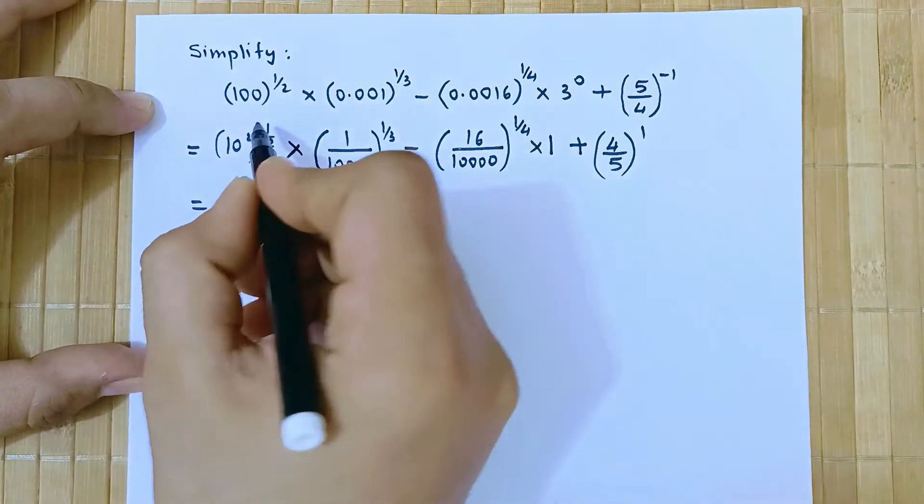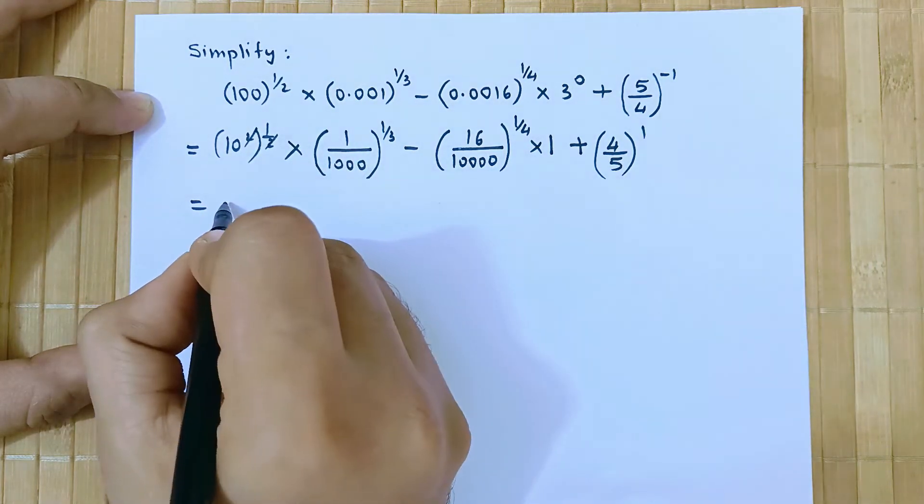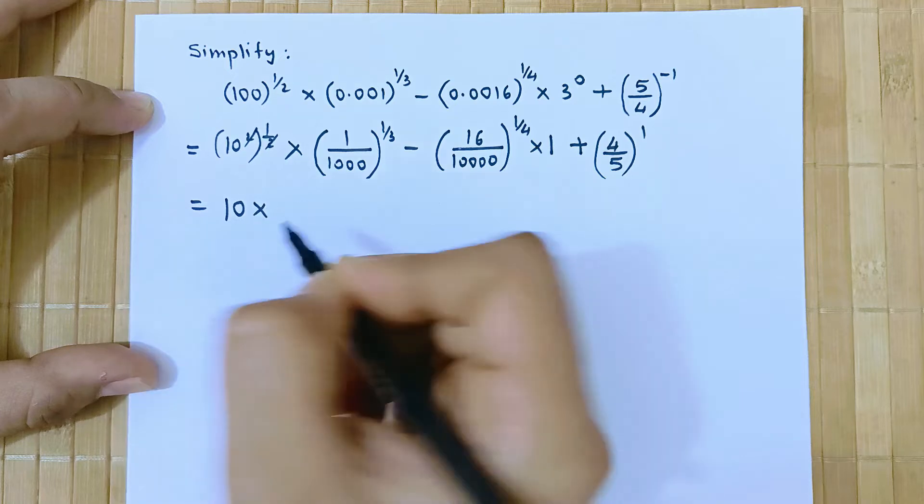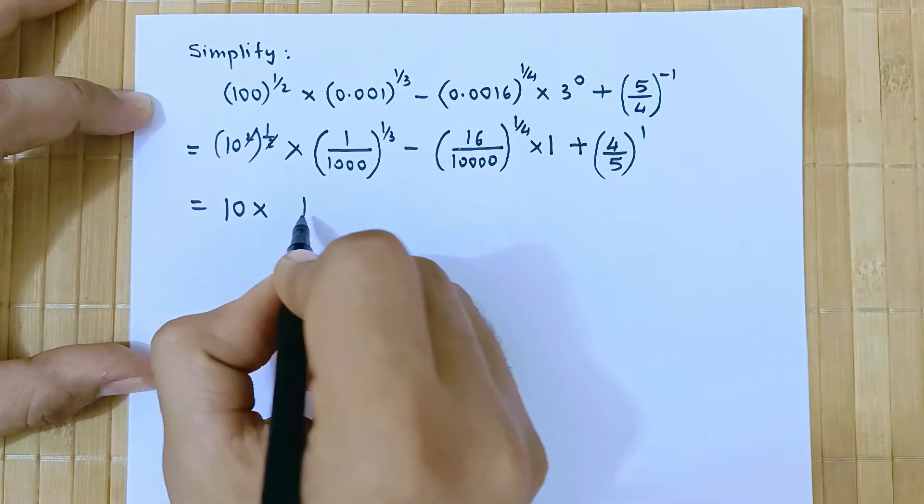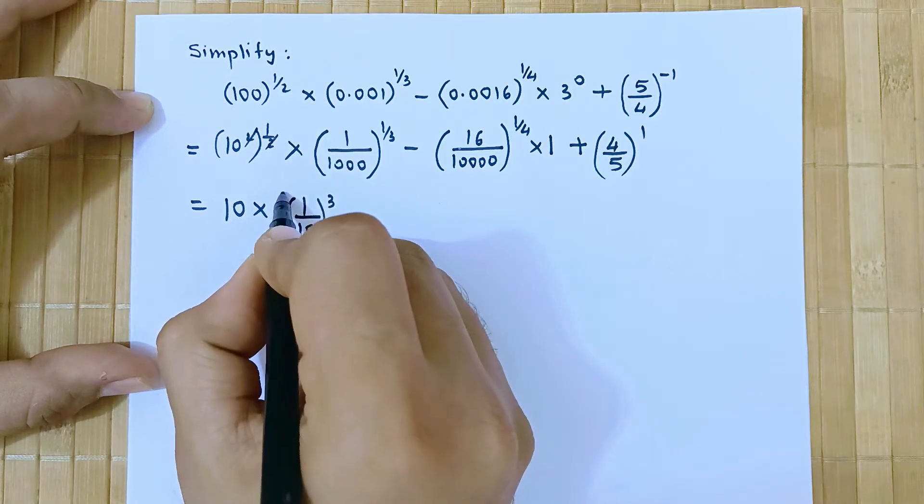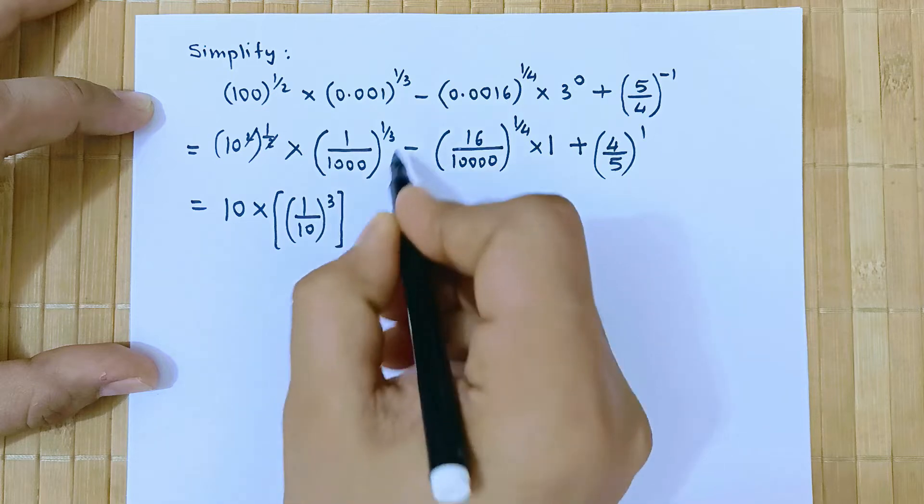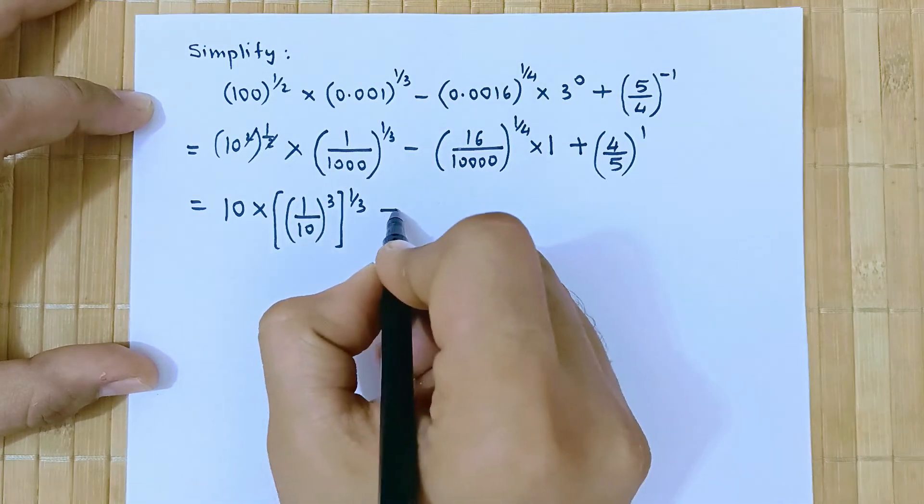Proceeding further, here 2 and half cancel out. So here it will be 10 into, this is 10 cubed. So this term we can write as 1 upon 10 the whole cube and raised to we have 1 by 3 minus.